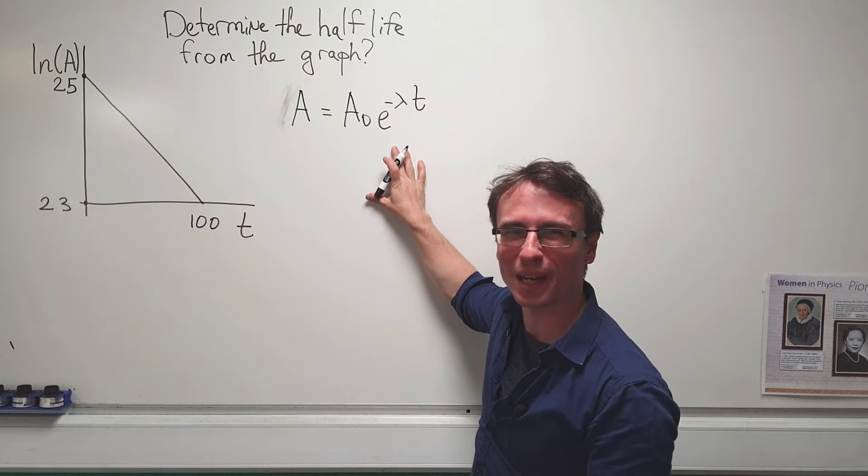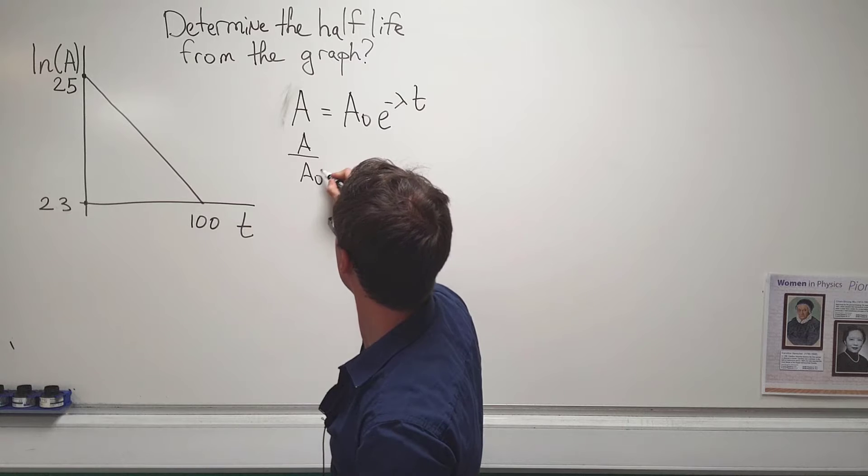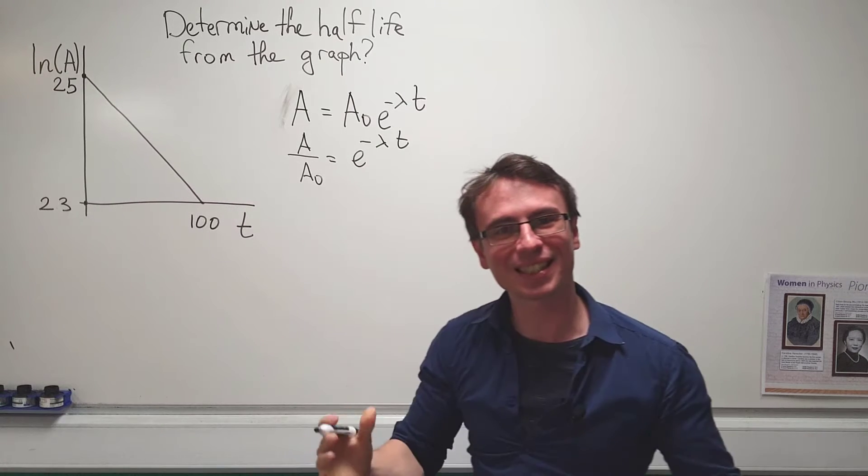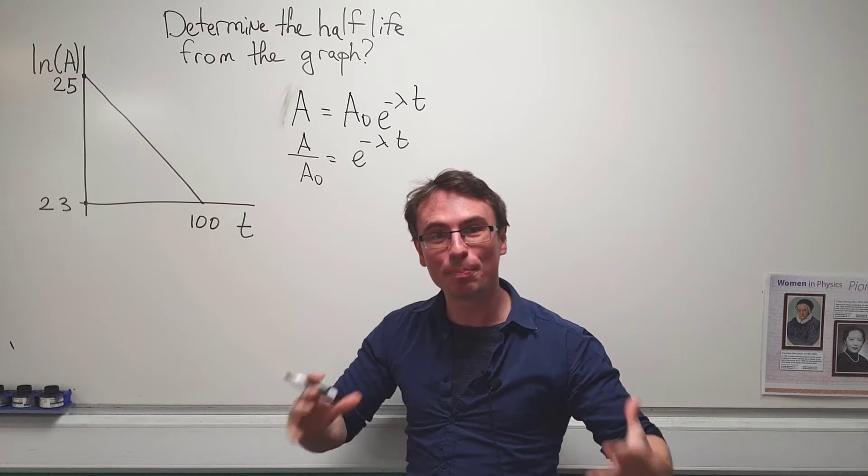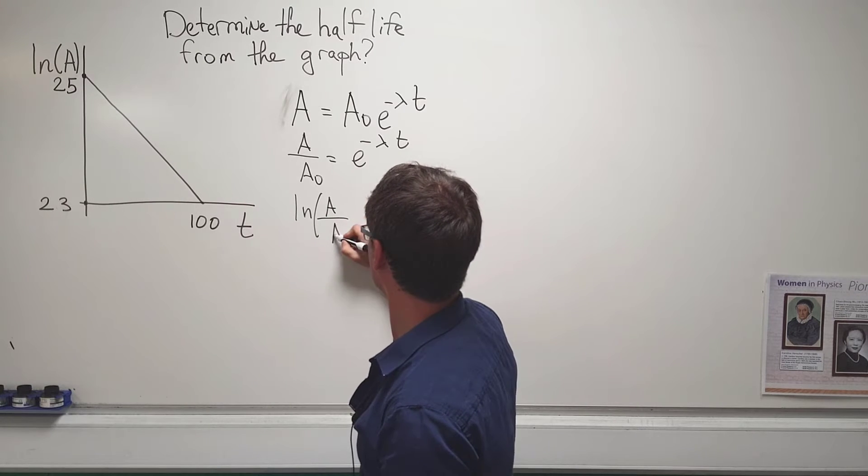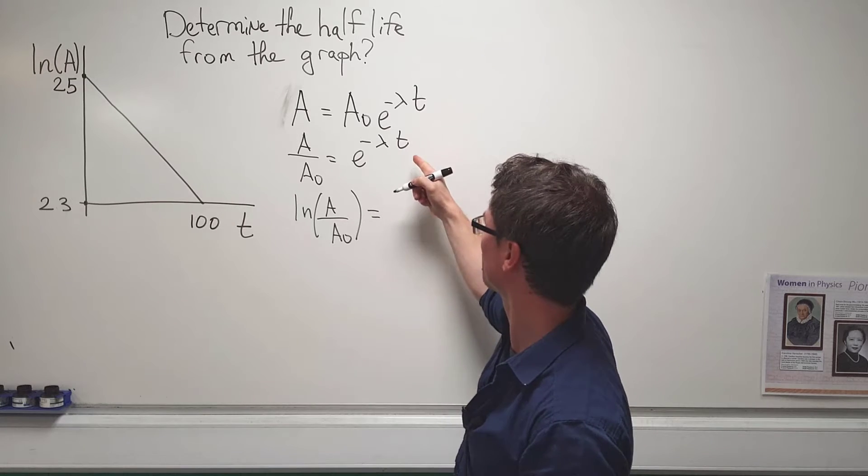First of all, let's just rearrange for this exponential. What we're going to get is that A over A₀ is equal to e to the minus lambda t. Now what I'm going to do is take the natural log of both sides and what I'm going to get is that ln of A over A₀ is equal to the ln of e to the minus lambda t.